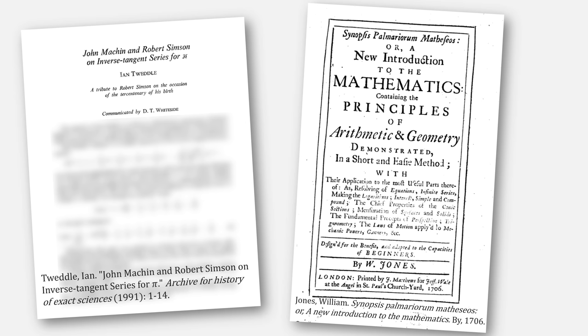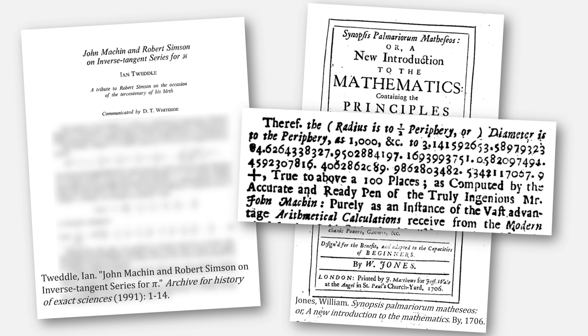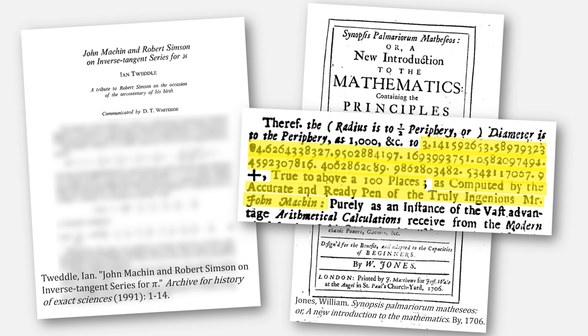The paper, John Machin and Robert Simon on inverse tangent series for Pi, makes reference to this paper by William Jones, wherein he gives the first 100 decimal digits for Pi, as computed by the accurate and ready pen of the truly ingenious Mr. John Machin. Here's the equation that Machin used.